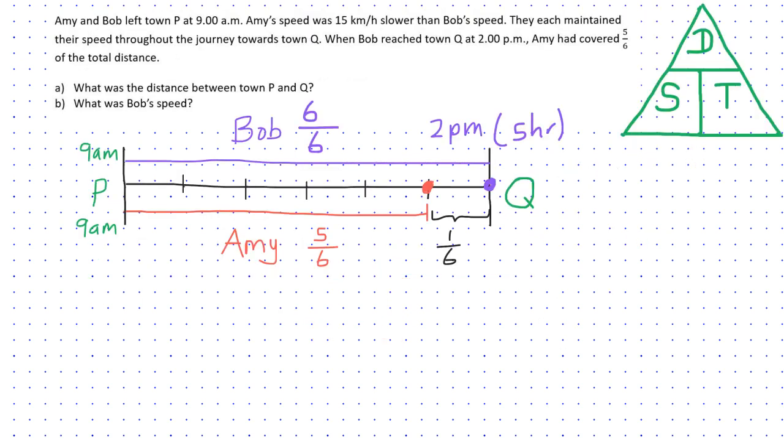So we need to find the distance between town P and Q. So when we look at the question, we see that it says Amy's speed was 15 km per hour slower than Bob's speed. So we need to use this information to derive our answer. The difference between Amy's speed and Bob's speed has been given to us. So therefore now we can find out the difference in the distance between where Bob is and where Amy is.